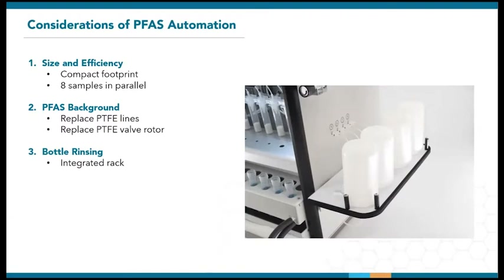Many labs see this as a key consideration when looking into automation. The picture here shows our setup for 250 ml bottles used for Methods 533 and 537.1. Bottle rinsing is performed by spraying solvent upwards into the bottles, which are mounted upside down. With this feature, there's no need for the user to come back in the middle of the run to rinse each bottle.